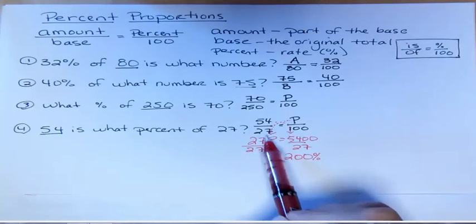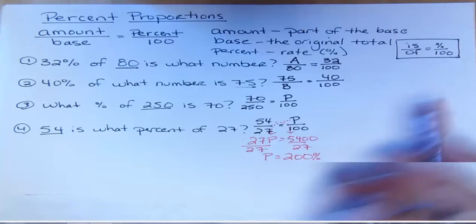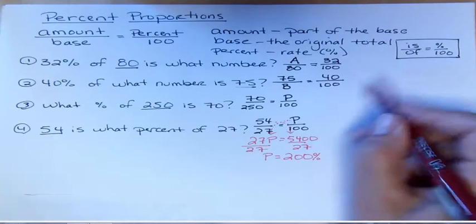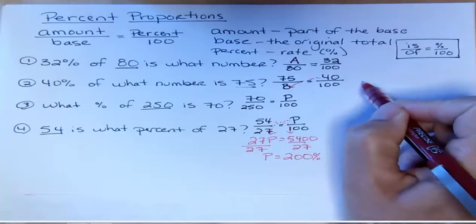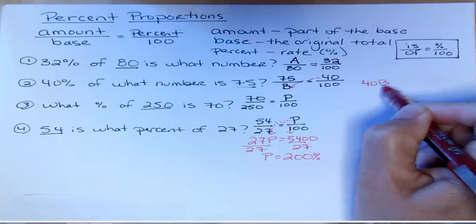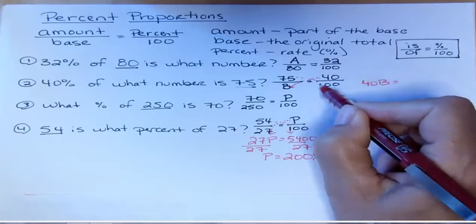Let's do one more. We'll do this one up here. If I cross multiply, 40 times B I get 40B, and if I cross multiply 75 times 100 I get 7500.